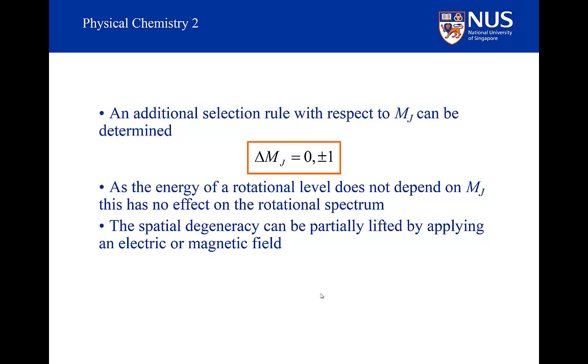If I apply an electric field in a particular direction, there is going to be an interaction between my dipole moment and the electric field, and the interaction now does depend on the spatial orientation of the molecule. And so the energy of the system will depend on the Mj quantum number, and the selection rule with regard to Mj will affect the rotational spectrum.